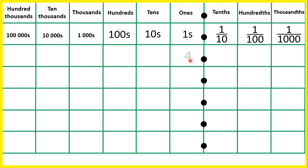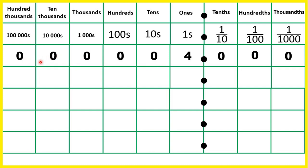If we just have four ones, we really have invisible zeros in all of our other place values, but we don't need to write zeros at the start of a whole number, and we don't need zeros on the end of decimals.